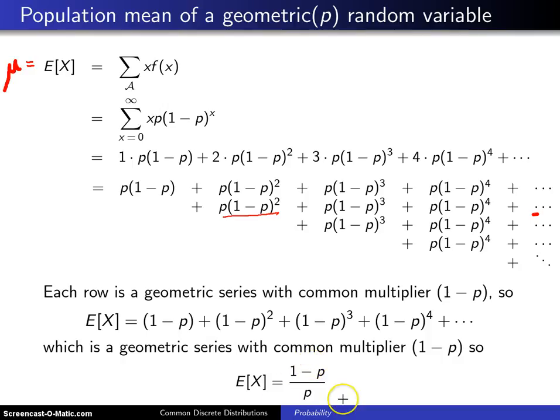So finally, the population mean of a geometric random variable turns out to be (1 minus p), the term that was factored out here, divided by p.